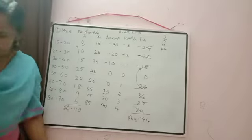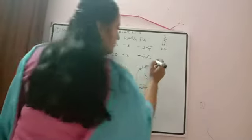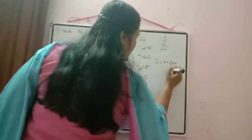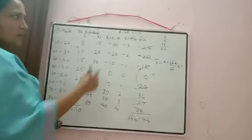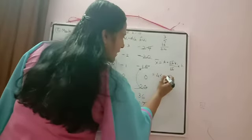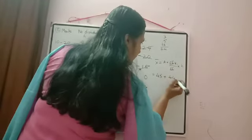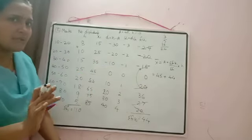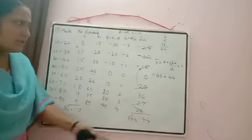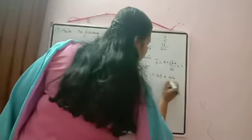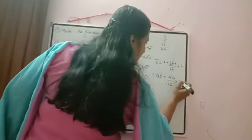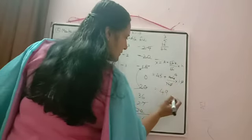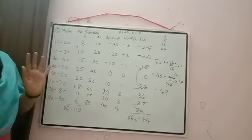Now calculate the mean using the step deviation formula: x̄ = A + (Σfᵢuᵢ / Σfᵢ) × h = 45 + (44/110) × 10. Simplify: 44×10/110 = 440/110 = 4. So x̄ = 45 + 4 = 49.